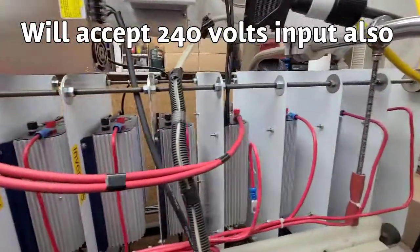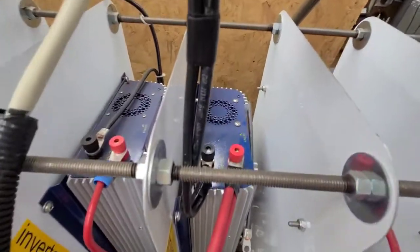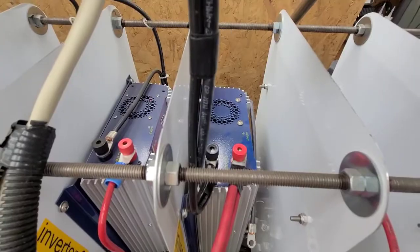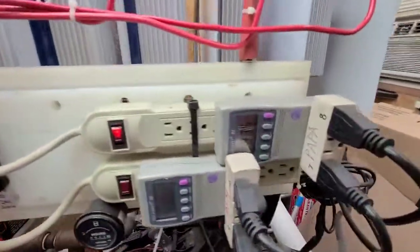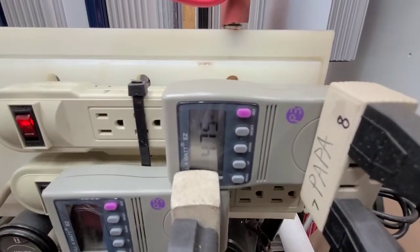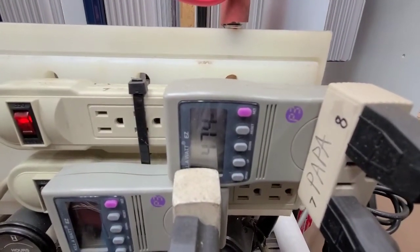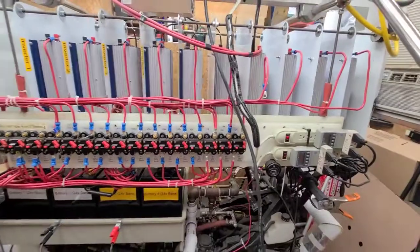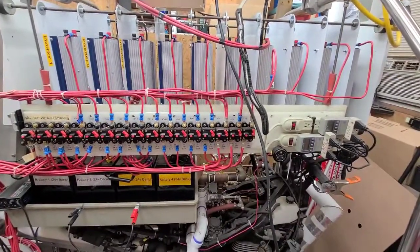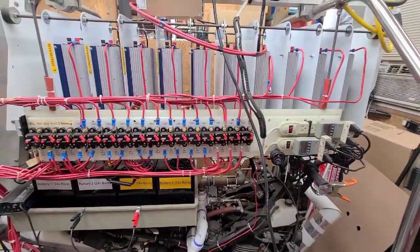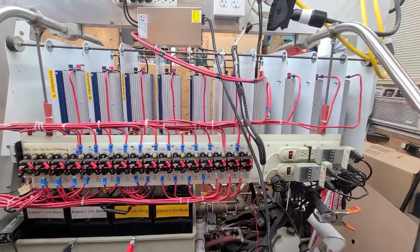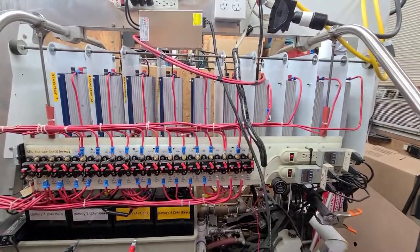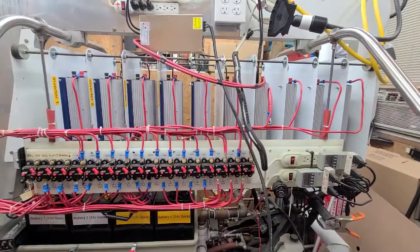It's wired directly to this grid tie inverter that you can see blinking away here, and it is producing grid tie power, 120 volts, 475 watts going into the house. So the purpose of this test is to see how much loss there is from the generator through the power supply and through the inverter and then to the grid. You can see how much energy it takes to produce grid tie power directly from a generator.